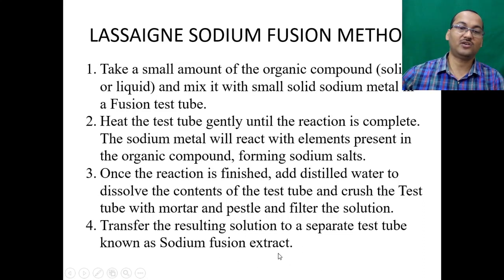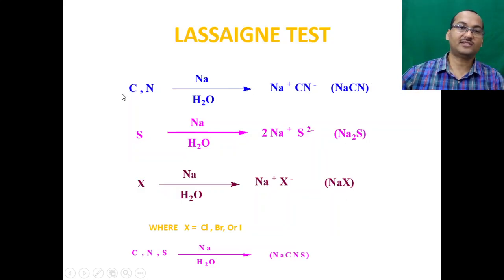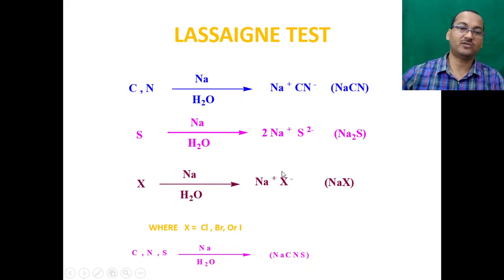During the Lassaigne test, if the compound has nitrogen, it reacts with sodium to give sodium cyanide (NaCN) in water. If sulfur is present, we get sodium sulfide (Na₂S). If a halogen is present, it reacts with sodium giving sodium halides like sodium chloride, bromide, or iodide. If both nitrogen and sulfur are present, the reaction with sodium gives sodium thiocyanate (NaSCN).